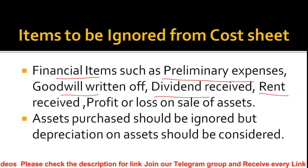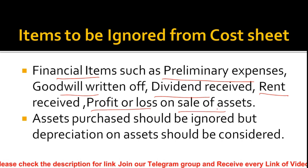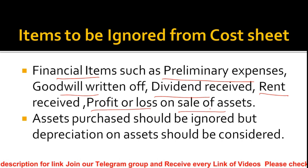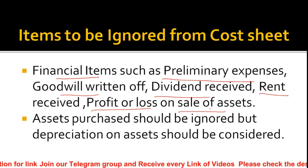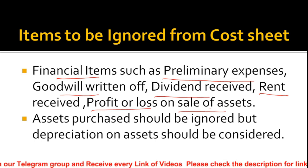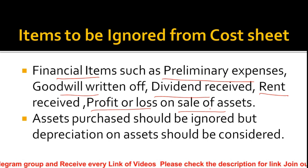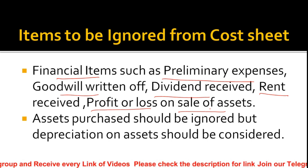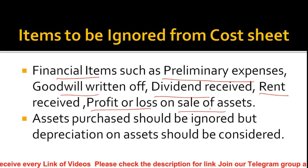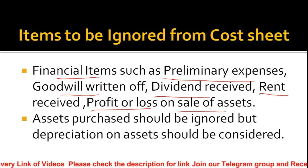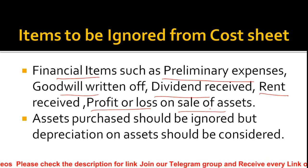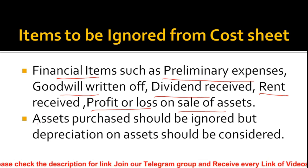Items of a pure financial nature are not recorded in the cost sheet. Financial items such as preliminary expenses, goodwill written off, dividend received, rent received, and profit or loss on sale of assets — all these are to be ignored. Whenever the examiner gives questions on cost sheet, financial nature items must be ignored.